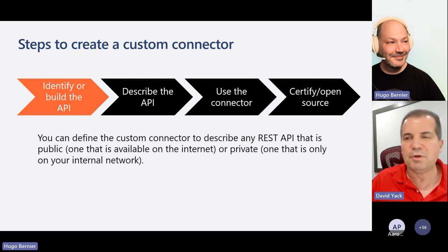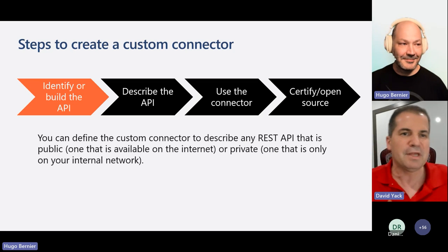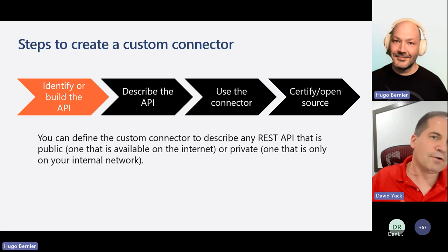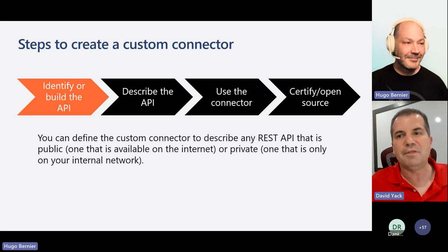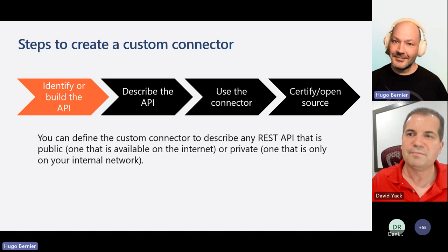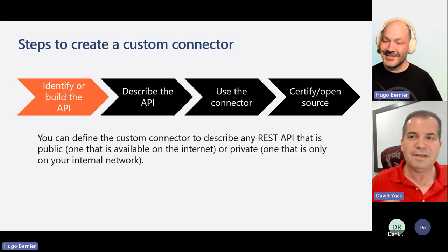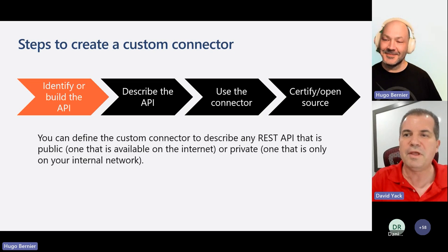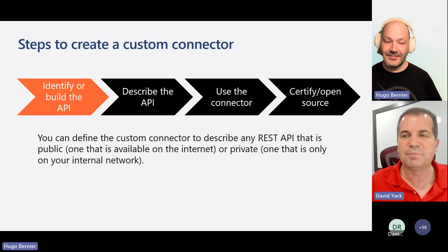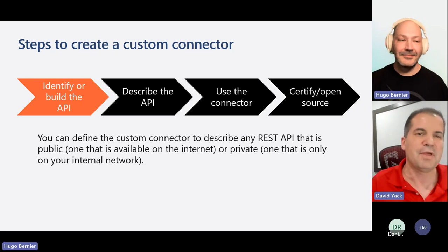Let's talk about the steps to build a Custom Connector, because this is the real fun part — it's not that hard to do. The first thing you want to do is identify the API, but before that, make sure there's not already one that does what you're looking for. They've been adding tons of Custom Connectors and certifying them, either as certified connectors or independent publishers.